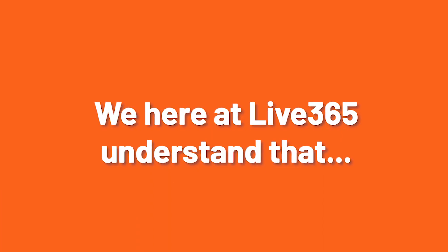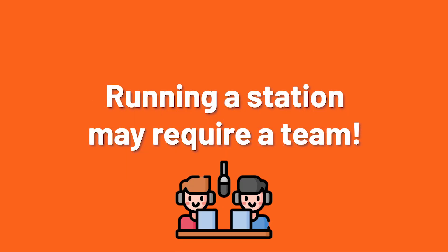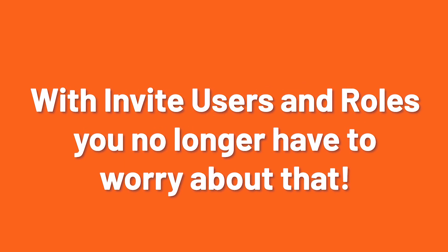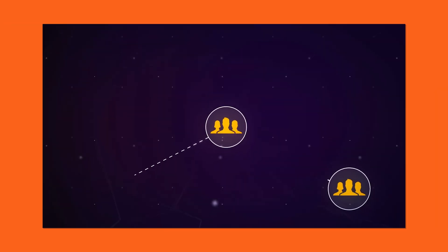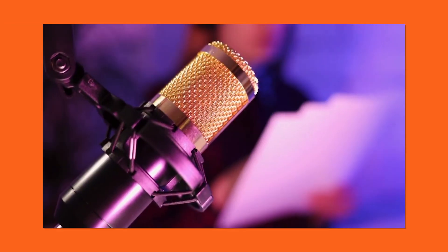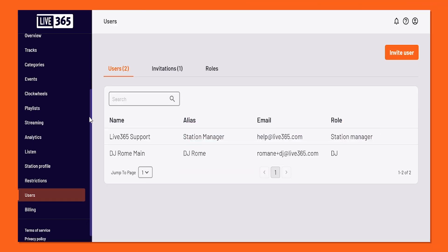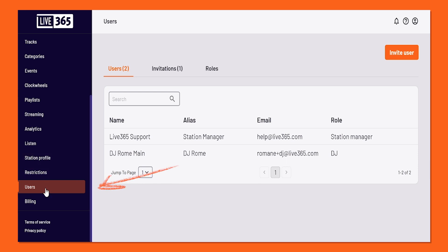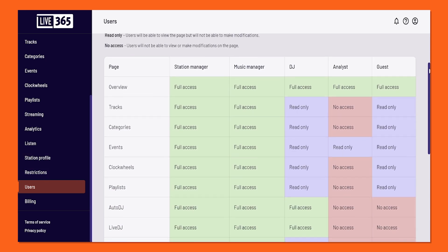We here at Live 365 understand that running a station may require a team. With this new feature, you no longer have to worry about that. We've now made it easier for you to bring your collaborators directly to your station. Not only that, but you can also assign them specific roles, which will grant them certain permissions on your station. In today's video, we will be going over where you can find this feature, as well as a brief look into the roles you can assign.